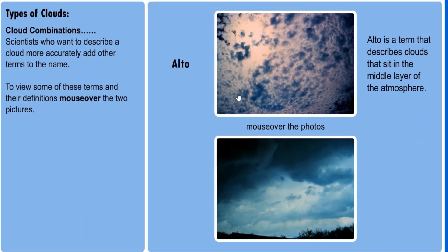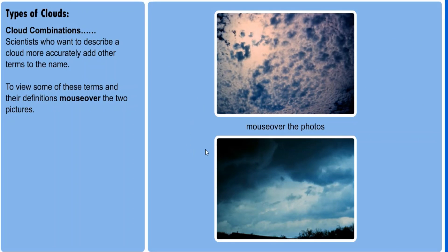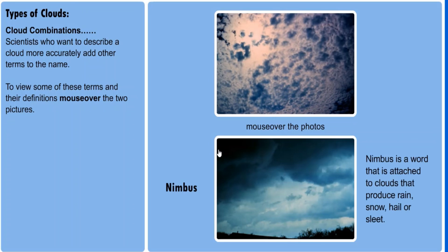Another word we can include with clouds is the word nimbus. This is attached to a cloud that produces rain, snow, hail or sleet. For example, a cumulonimbus is a large grey, flat-bottomed cloud that sits low in our atmosphere, and from which you get large storms.